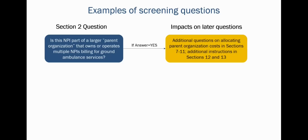The purpose of section two is to learn more about your organization and ensure that questions you see later are more relevant. Question two asks if the NPI is part of a larger parent organization that owns or operates multiple NPIs billing for ground ambulance services. If you answer yes, you'll see questions in later sections asking you to estimate what portion of your parent organization's expenses — like facility or supply expenses — should be attributed to your NPI. If you answer no, those questions won't appear.